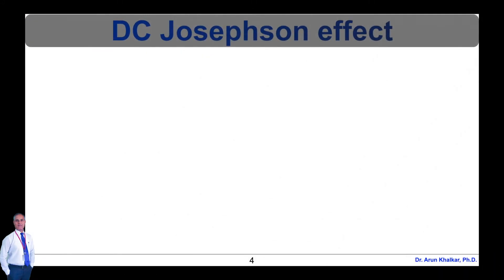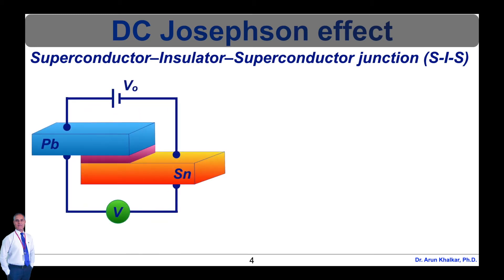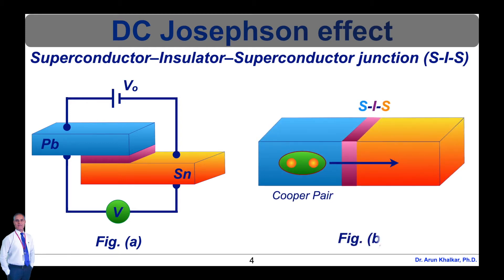Now let's see what is DC Josephson effect. The superconductor-insulator-superconductor junction, i.e. SIS junction, is shown in this diagram. When two superconductors are separated by a thick insulating layer greater than 10 nm, they behave as two independent superconductors. When the insulating layer is thin, i.e. nearly 1 nm, it becomes a system of coupled conductors. In figure A, lead and tin are coupled with insulator and connected to the circuit. The current flowing through the circuit is with the help of Cooper pair electrons as shown in figure B. The concept of Cooper pair we have already discussed in our previous lecture.